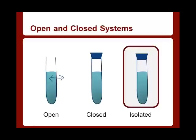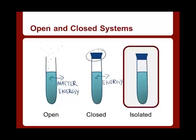An open system is able to exchange both matter and energy with the surroundings. You could imagine that if we had a liquid in a test tube, it would be able to evaporate, or we might be able to add heat — so either matter or energy, going in either direction. A closed system cannot exchange matter; it can only exchange energy — and again, that can go either direction. In an isolated system, we have no exchange of matter or energy.